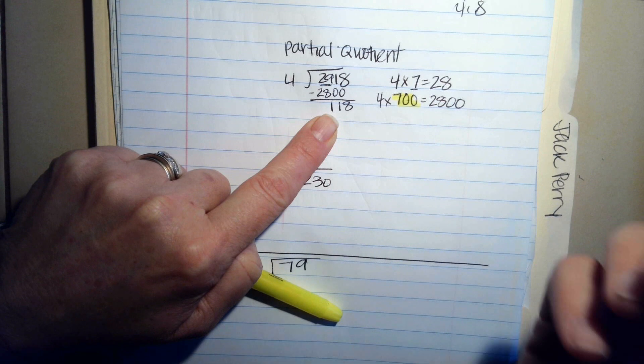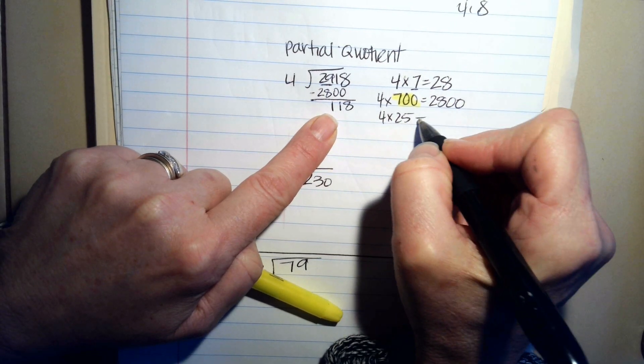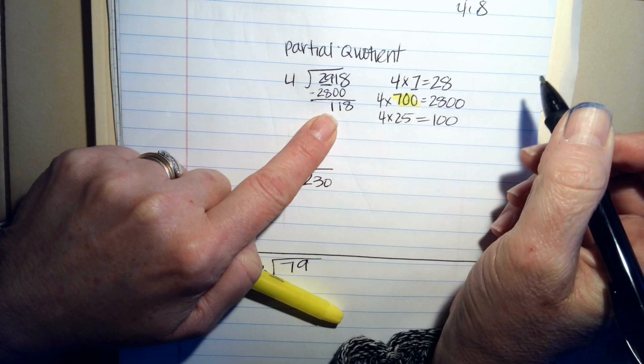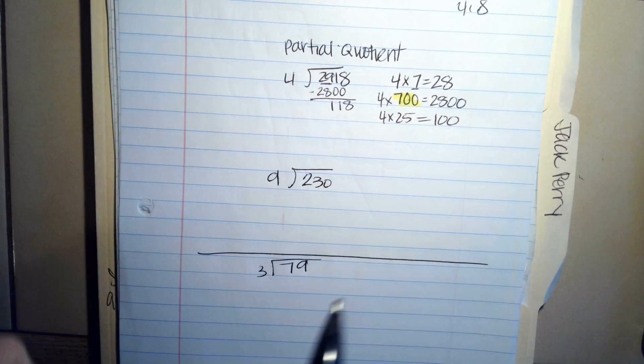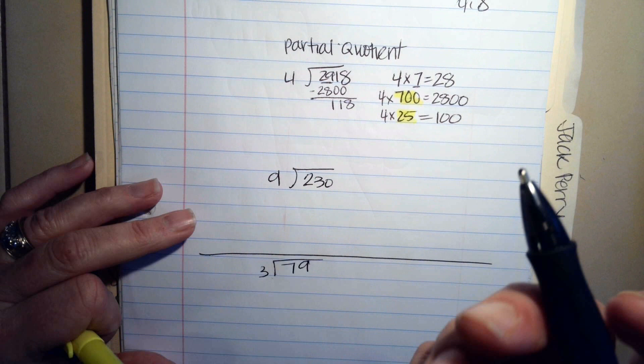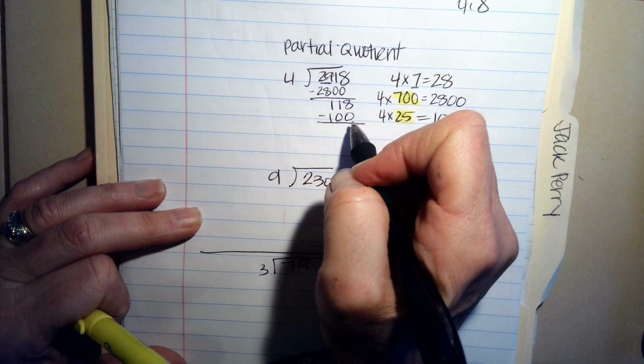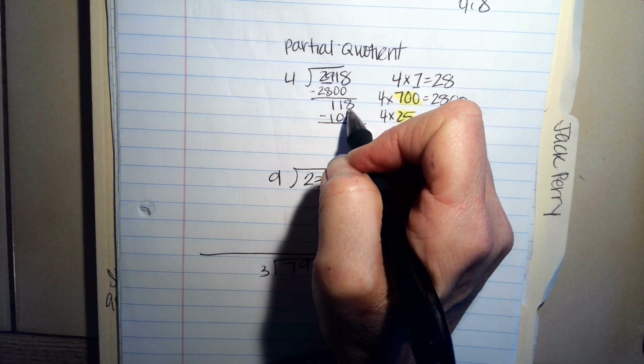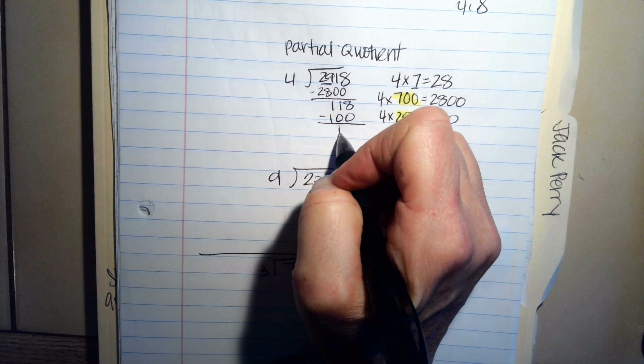Well, I know 4 times 25 is 100, so that's pretty close. I'm just going to use that. So now I'm at 100, and 118 minus 100 is 18.